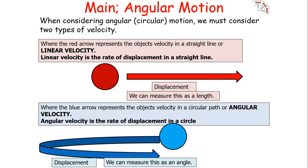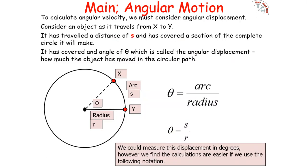We measure displacement in linear velocity as a length, but we measure displacement in angular velocity as an angle. To calculate angular velocity we must consider the angular displacement — the amount of angle changed when the object rotates in a circle. Consider the object travelling from x to y: it has travelled a distance s along the arc and covered an angle θ, the angular displacement. From mathematics, θ equals arc over radius, or s over r, so we can assign a unit to that angular displacement.